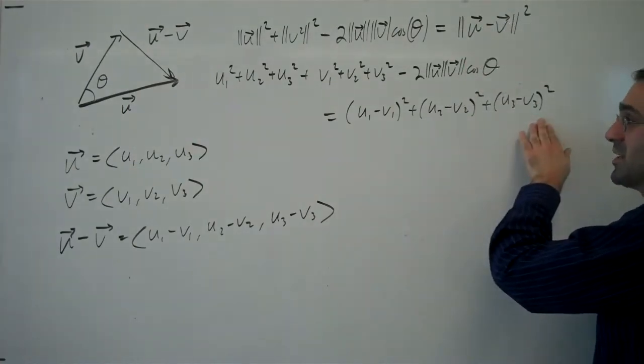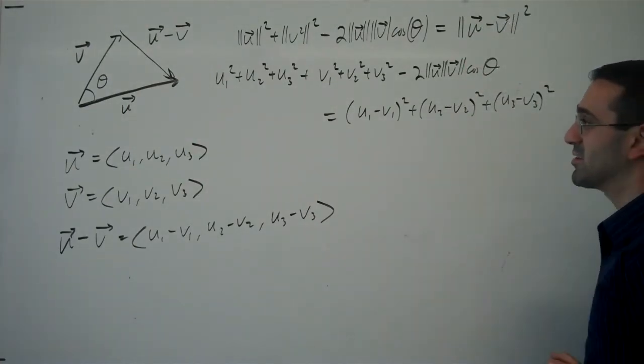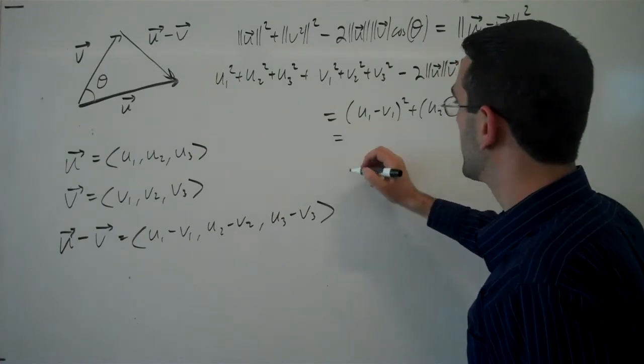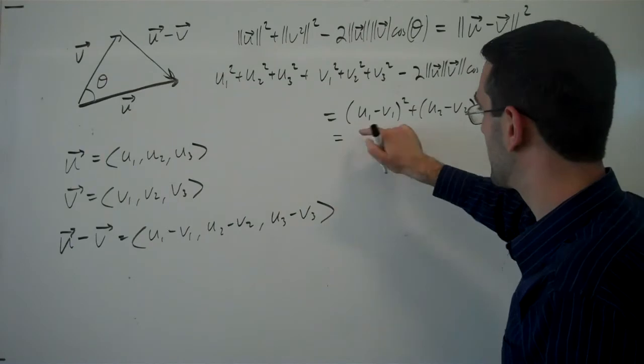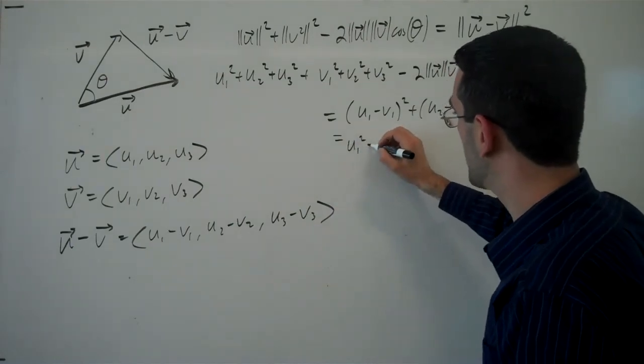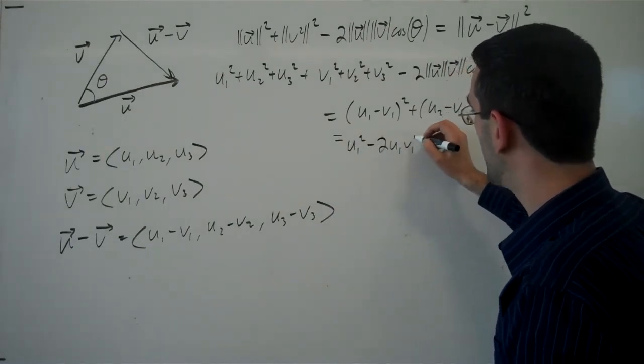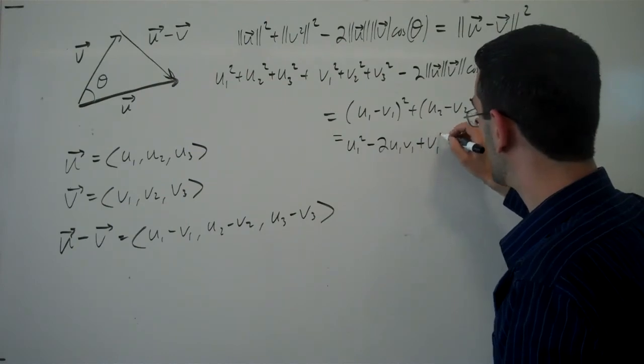Now, we need to simplify this further. We're going to need to expand that out. So this is still the right-hand side of this. Expanding this out, we're going to get u1 squared minus 2u1v1 plus v1 squared. So first down and then last here.